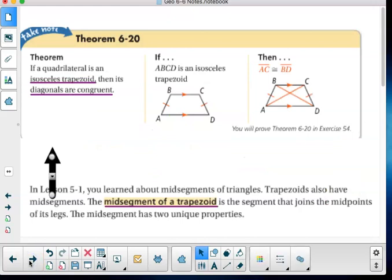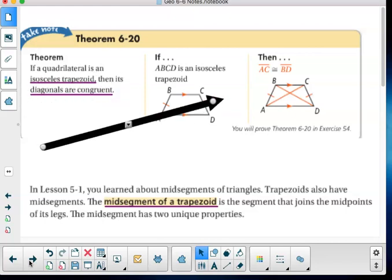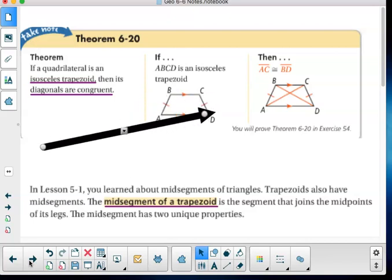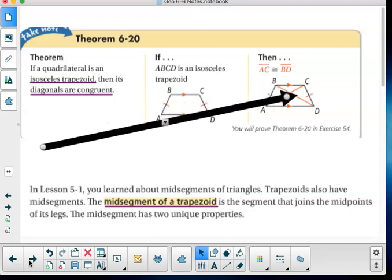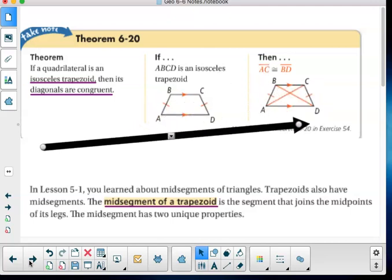Now, another property of trapezoids. This is similar to what we saw with rectangles. If a quadrilateral is an isosceles trapezoid, then its diagonals are congruent. So it's isosceles, parallel line, parallel line. These legs are the same. It's an isosceles trapezoid, then diagonals are congruent.